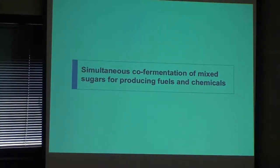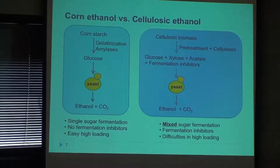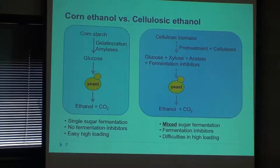The first example I'd like to introduce is simultaneous co-fermentation of mixed sugars for producing fuels and chemicals. Probably you've heard about corn ethanol — a very simple process. We harvest corn starch, use enzymes to generate monomeric glucose, do yeast fermentation, and produce ethanol and carbon dioxide. This is heavily practiced in the United States — we have more than 200 corn ethanol plants. More than 40% of the corn produced in this country is converted into ethanol. About 10% of your gasoline at the gas station is actually ethanol, used as a petroleum replacement.